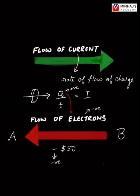This is the same transaction as A paying B $50. So even though minus $50 is flowing from B to A, the actual money transfer is from A to B. This is why the flow of current is taken opposite to the flow of electrons.